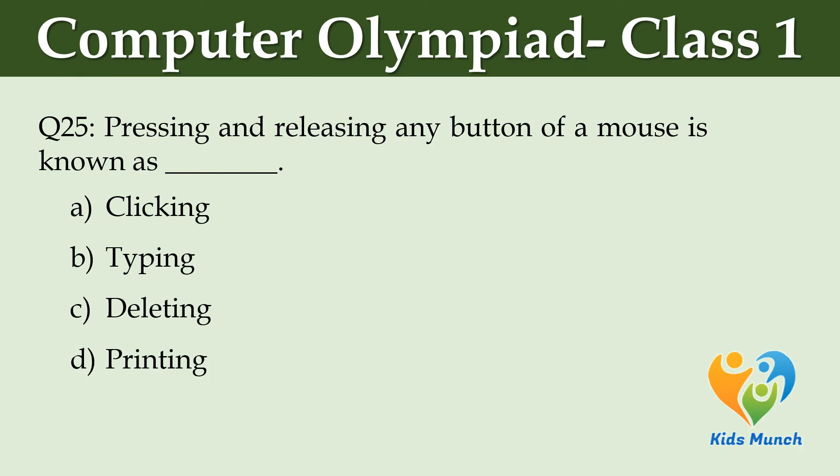Pressing and releasing any button of a mouse is known as dash. Option A: Clicking. Option B: Typing. Option C: Deleting. Option D: Printing.